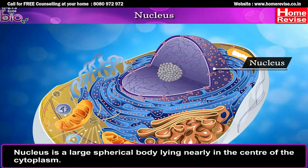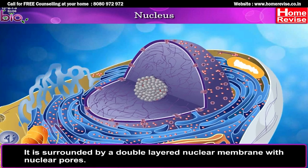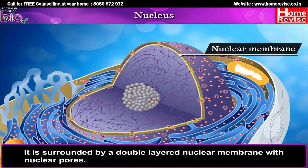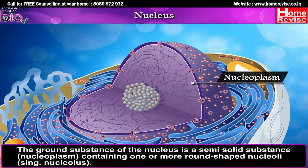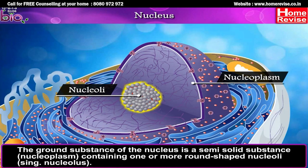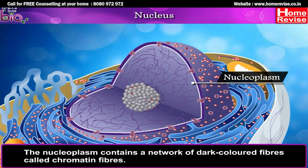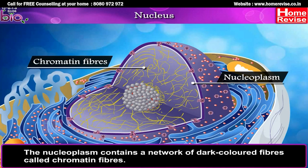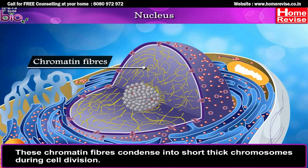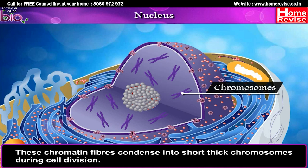The nucleus is a large spherical body lying nearly in the center of the cytoplasm. It is surrounded by a double-layered nuclear membrane with nuclear pores. The ground substance of the nucleus is a semi-solid substance called nucleoplasm, containing one or more round-shaped nucleoli (singular: nucleolus). The nucleoplasm contains a network of dark-colored fibers called chromatin fibers. These chromatin fibers condense into short, thick chromosomes during cell division, as seen in the figure.